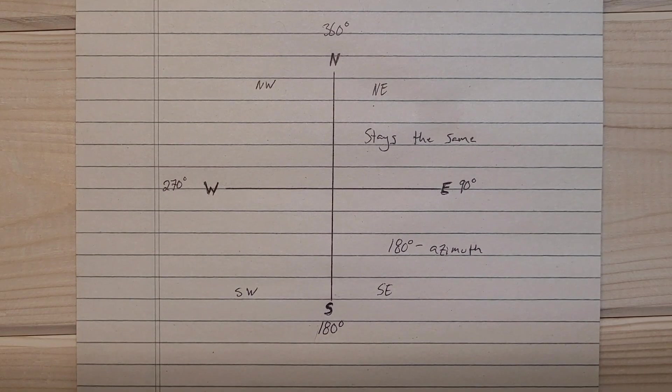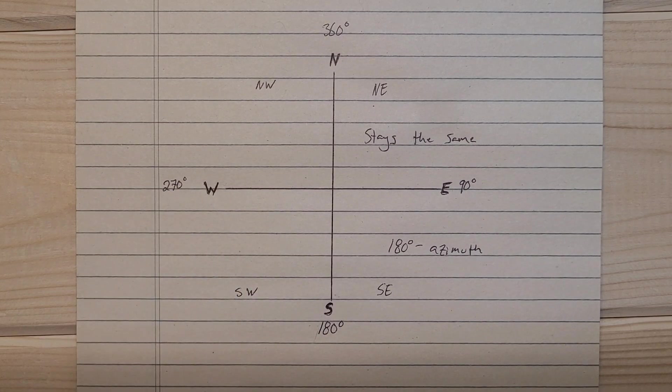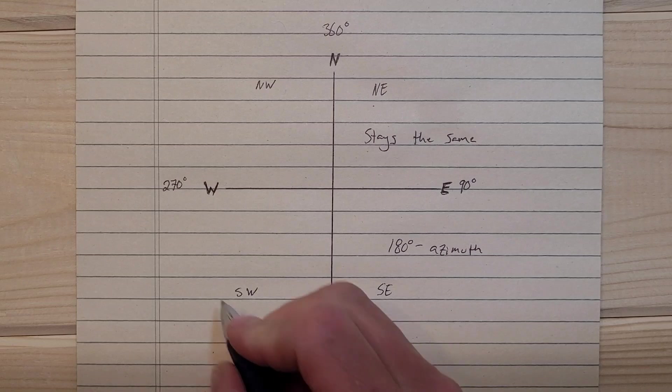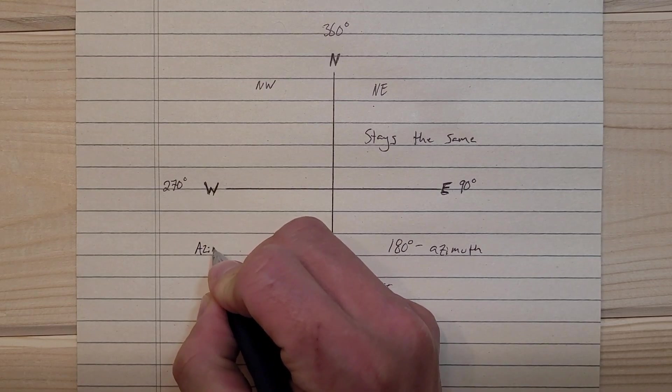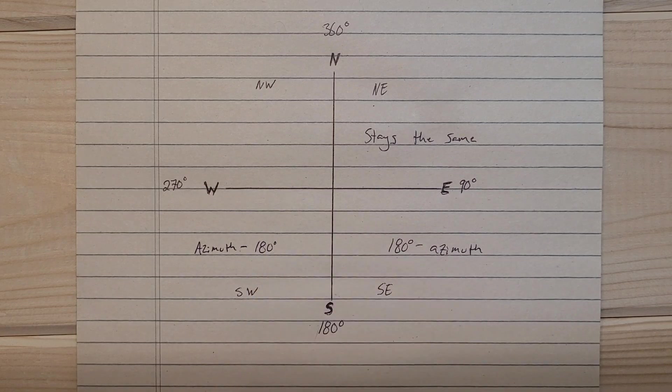If you are given an azimuth that falls between this quadrant here, 180 and 270 degrees, you just take the azimuth and you subtract 180 degrees to give you the bearing.